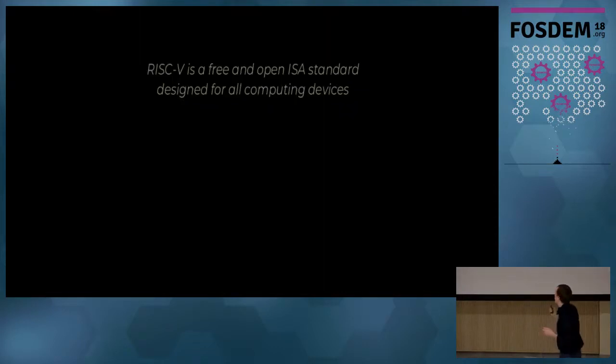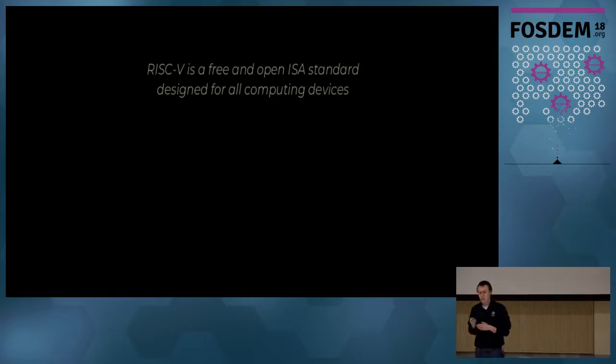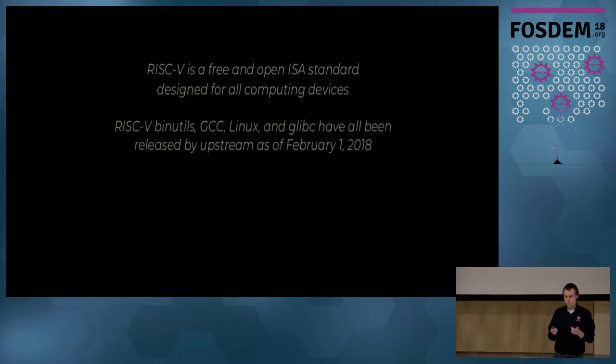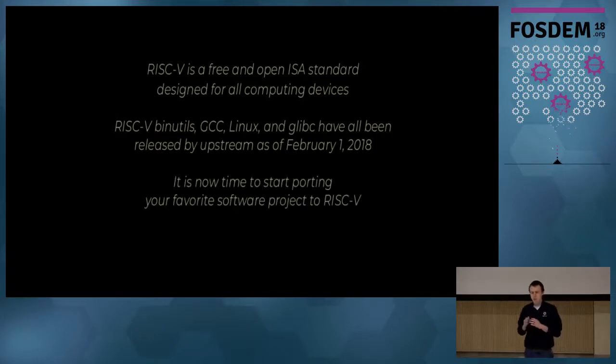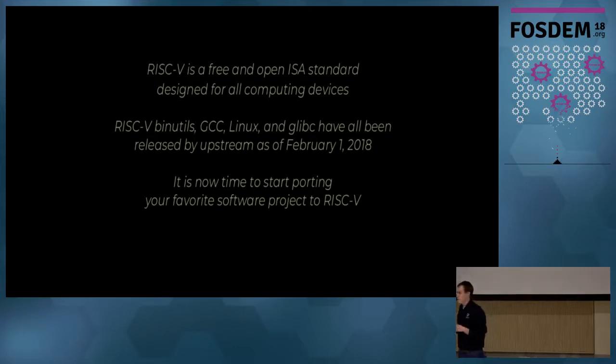So what is RISC-V? RISC-V is a free and open ISA standard designed for every computing device, from the smallest embedded IoT device to the largest supercomputer. The major watershed moment in the last week is that the RISC-V port of GLib-C has been submitted upstream and released, which means that now the core components of the Linux software stack have been ported to RISC-V. That means it's now time to start porting your favorite software project to RISC-V.